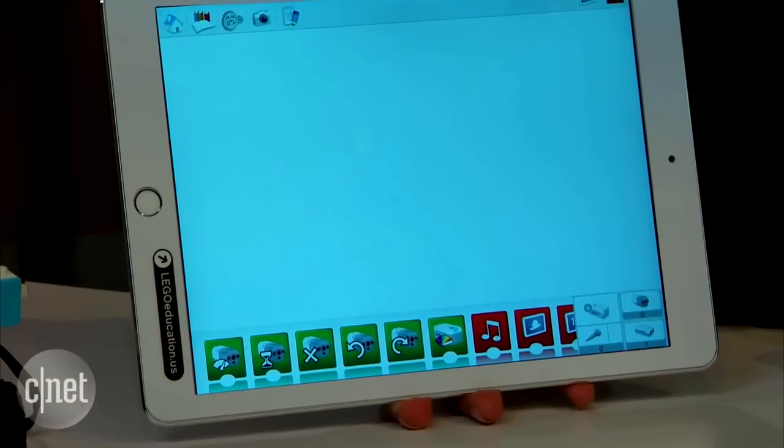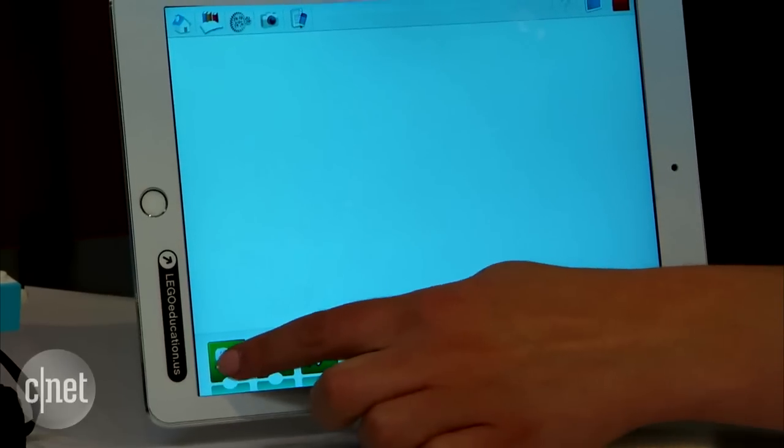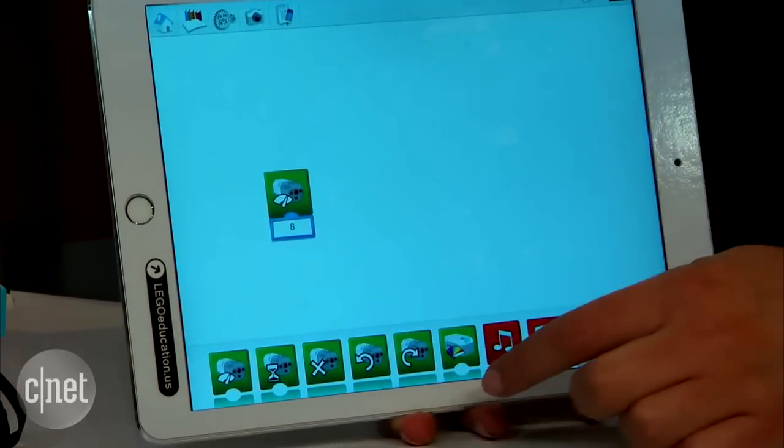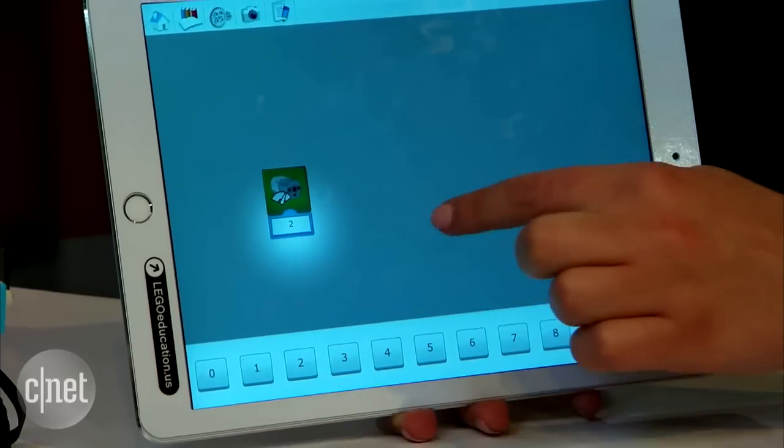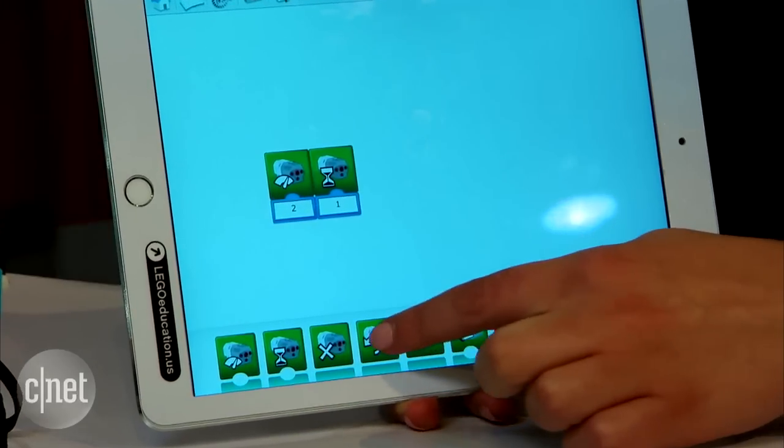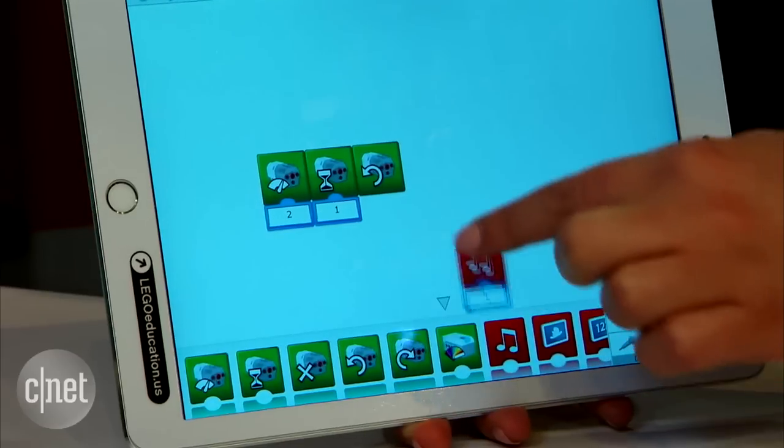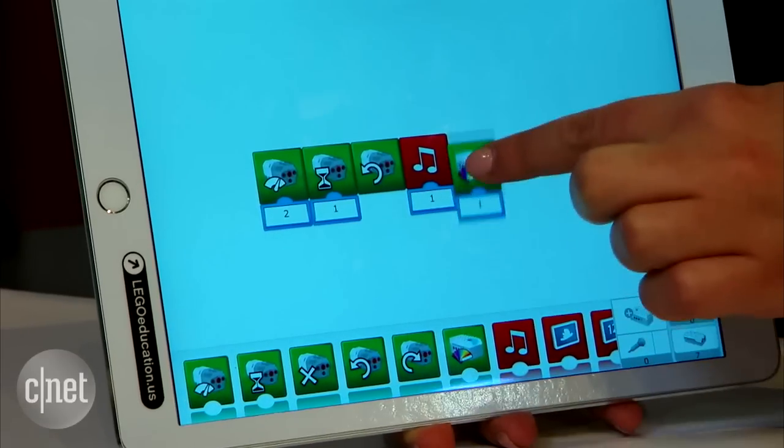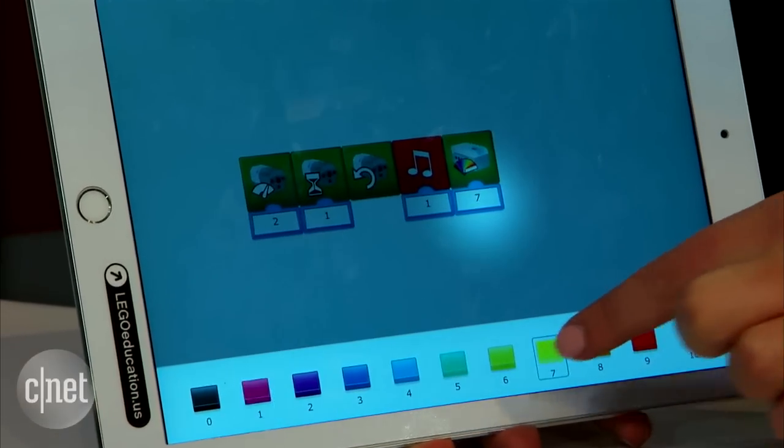Let's create a little bit of a program with our friend here. What I want to do is create some movement for two seconds. Then I want it to pause and I want to do a rotation, play some music, change color, change the color to something like a nice yellow.